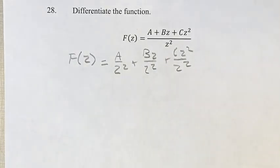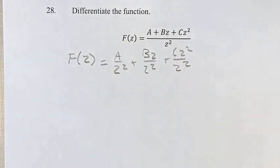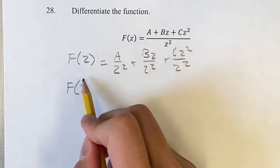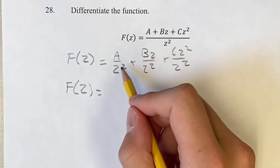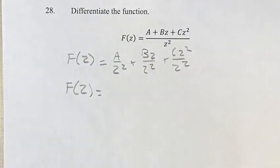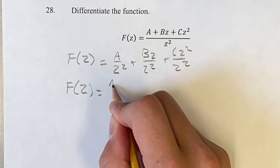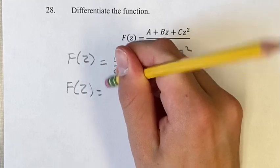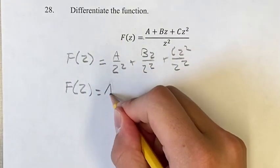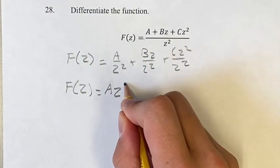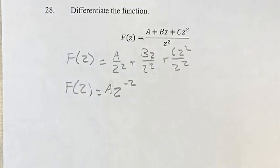This is going to make it easier to find the derivative. First, we want to get it in the form of a power function. If you have an exponent in the denominator and you want to bring it to the numerator, all you have to do is multiply the exponent by negative 1. So we have a times z to the negative 2, plus...